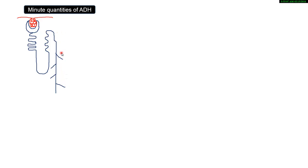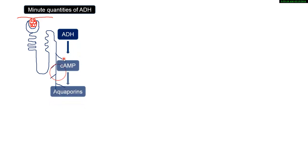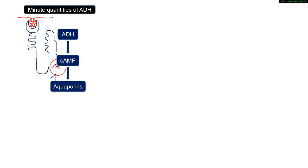ADH is synthesized by the hypothalamus, released by the posterior pituitary into the circulation, and it activates the adenylyl cyclase–cyclic AMP second messenger system. Once activated, cyclic AMP phosphorylates the proteins that make up the vesicles within the distal convoluted tubules and collecting ducts.